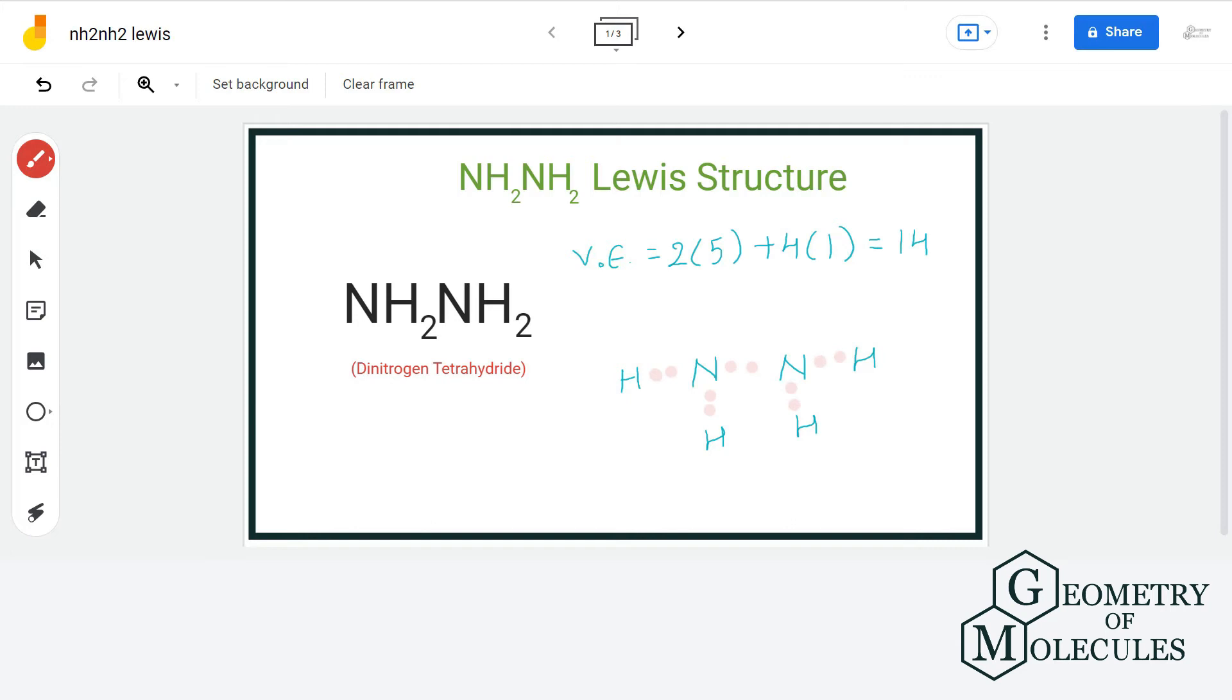Each nitrogen needs 2 more electrons for a complete octet, and we are still left with 4 more electrons. So we will assign 2 electrons to each nitrogen atom. Thus, each atom in this molecule has a complete outer shell, and this is the final Lewis structure of Dinitrogen tetrahydrate.